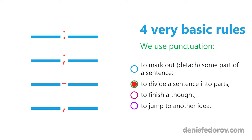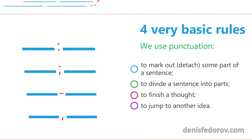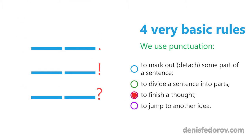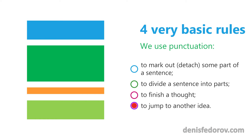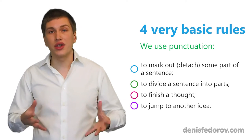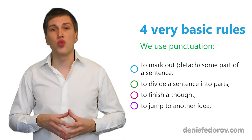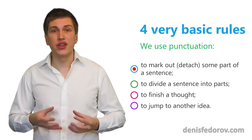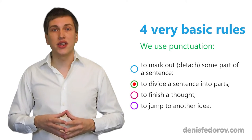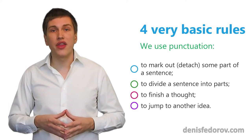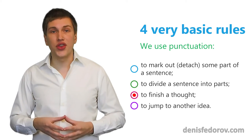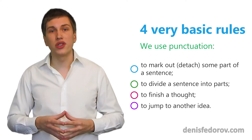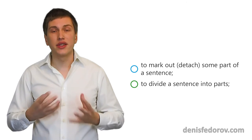We divide sentences into parts with colons, semicolons, dashes, and commas — not pair marks. Usually we do this when the thought, scene, or acting figure changes. We finish the thought with periods, exclamation and question marks. And we jump to another idea by starting another paragraph. The difference between Russian and English punctuation rules is within the limits of rules 1 and 2 — marking out and dividing — while points 3 and 4, finishing the thought and jumping to another idea, are the same in Russian and English.